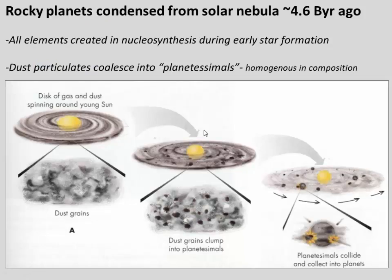Our story starts about 4.6 billion years ago. At that time the universe was basically a bunch of dust swirling around our Sun, and those dust grains started to clump together into what are called planetesimals. Those planetesimals then collided and collected into larger planets, things like Earth. At that time the composition of Earth was totally homogeneous — it was just this homogeneous dust all stuck together.